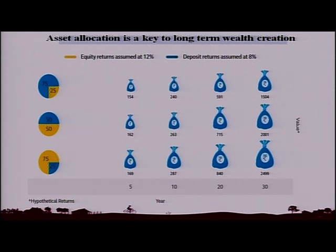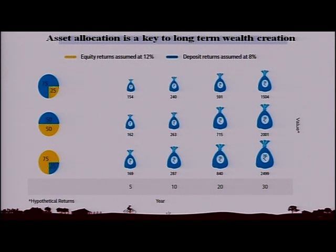Returns are assumed at around 8 percent. If you have a portfolio with an asset allocation of 75 percent on fixed income products and 25 percent on equity or equity-related products, then after 5 years 100 rupees will become 154, after 10 years it will become 240, after 20 years it will become 591, and after 30 years it will become 1504 rupees.